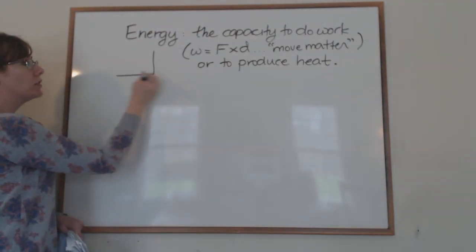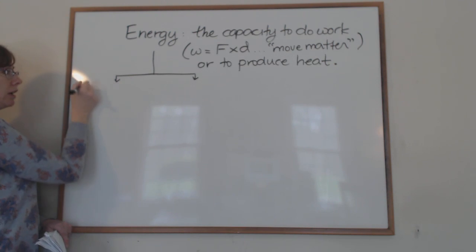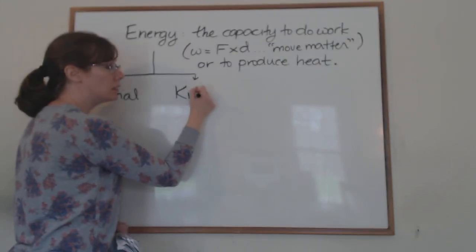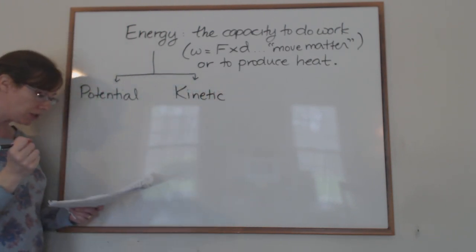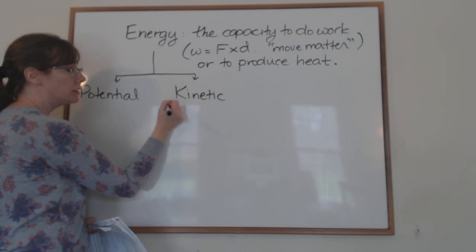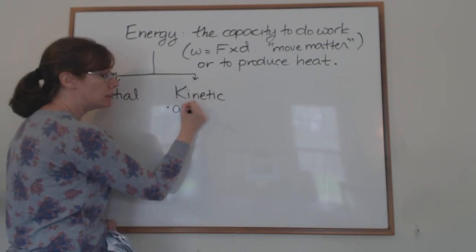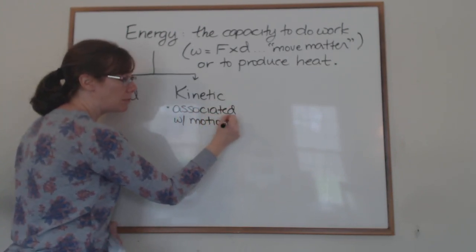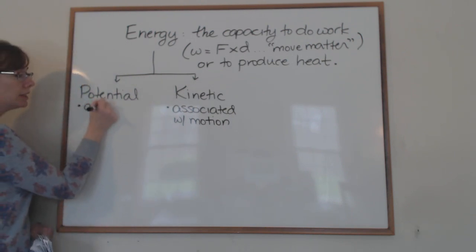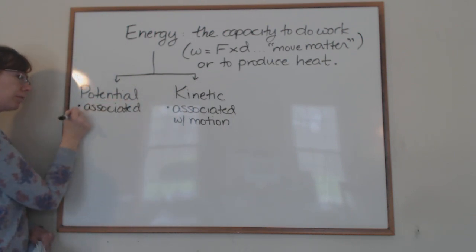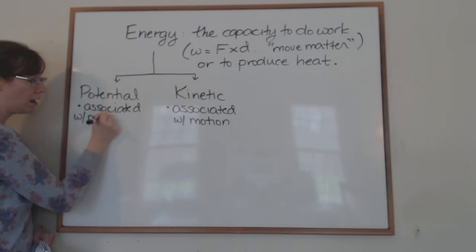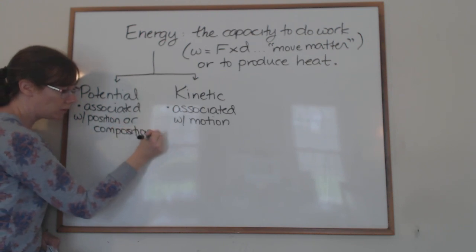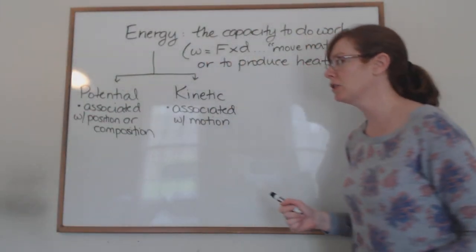Most people recall there are two forms of energy: potential energy and kinetic energy — one or the other. Kinetic energy is the energy associated with movement or motion. Potential energy is associated with position or composition. You have notes on that from the last time we talked about energy.